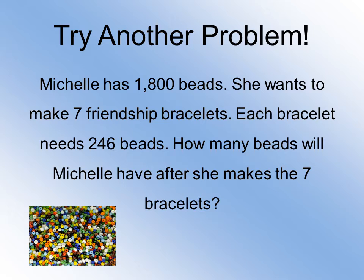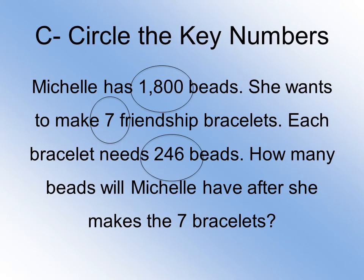Here's another problem. Michelle has 1,800 beads. She wants to make 7 friendship bracelets. Each bracelet needs 246 beads. How many beads will Michelle have after she makes the 7 bracelets? We're going to use the CUBES strategy again, starting with C — circle the key numbers. Our first number is 1,800, because that's the total number of beads. Next, she needs to make 7 bracelets. And last, each bracelet needs 246 beads.